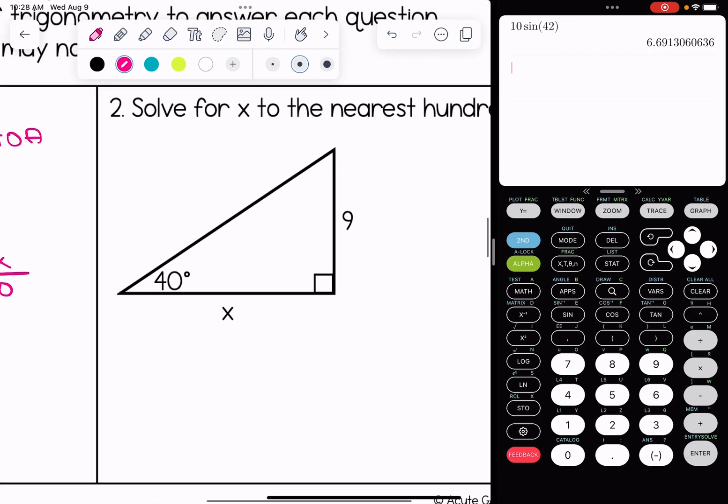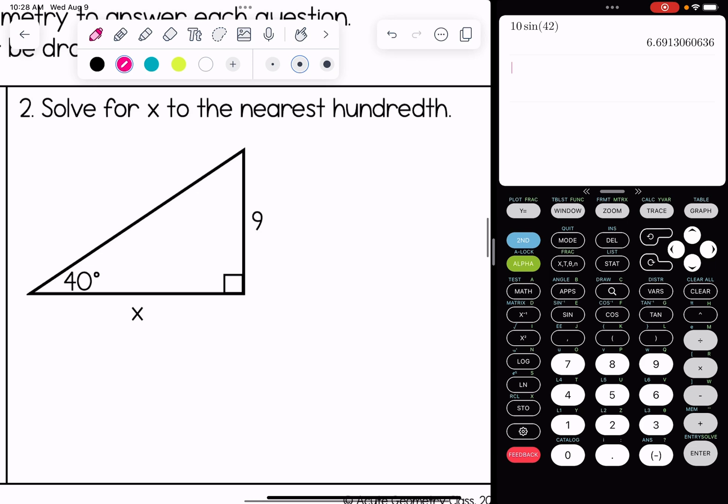Let's try another. Number two, we're going to jump into labeling our sides. Here's our hypotenuse, here's opposite, here's the adjacent. Now that I have something on the opposite side and the adjacent side, that's O and A, that means I'm going to use tangent.